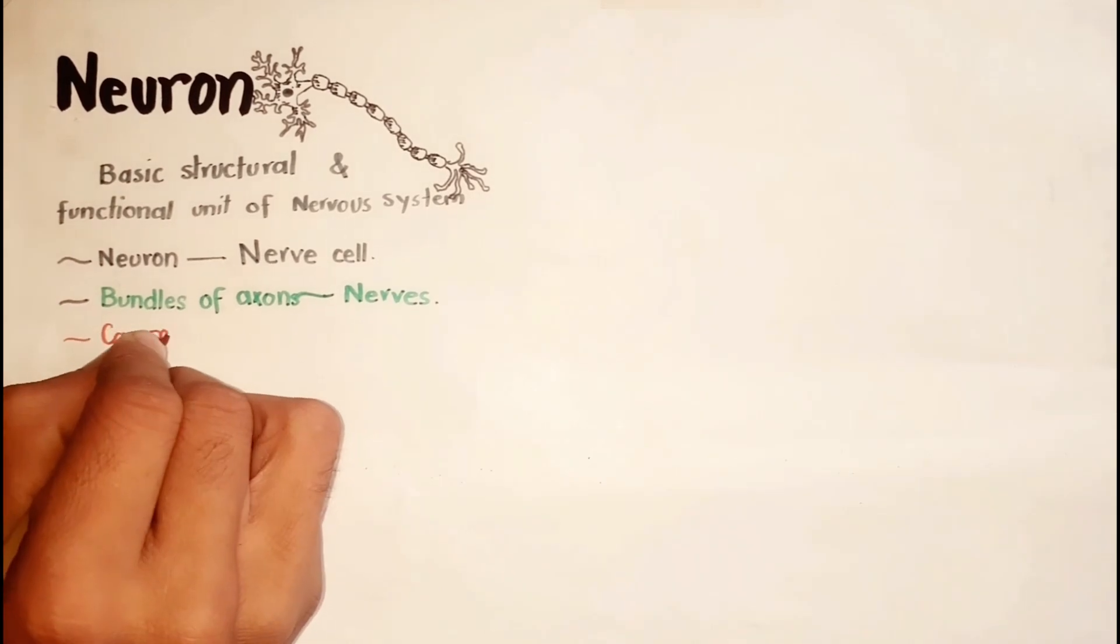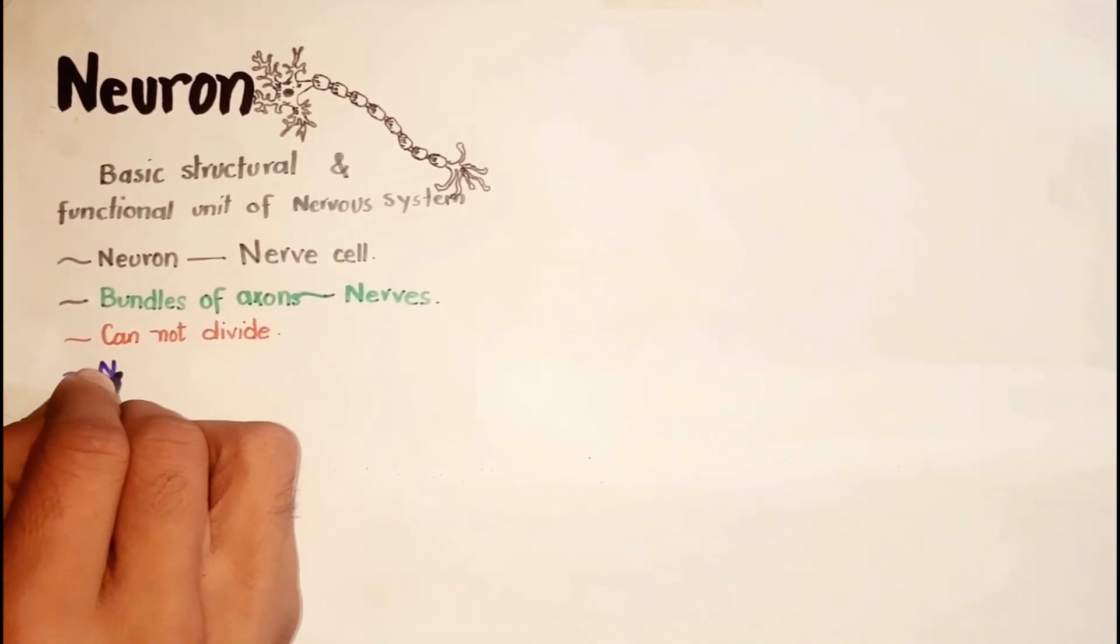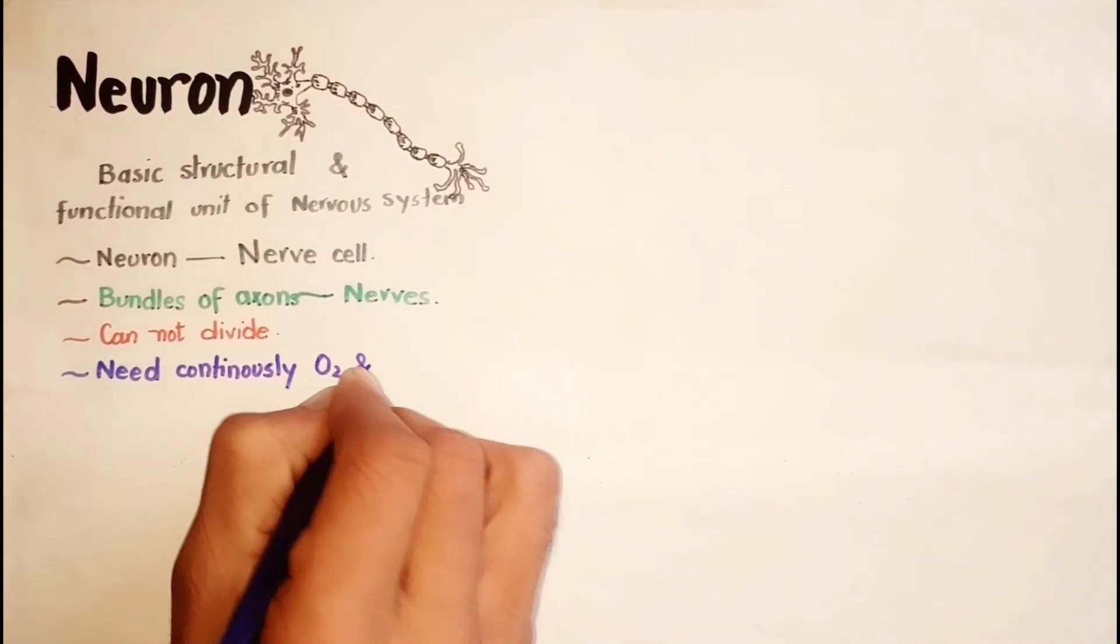Neurons cannot divide and for survival they need a continuous supply of oxygen and glucose.